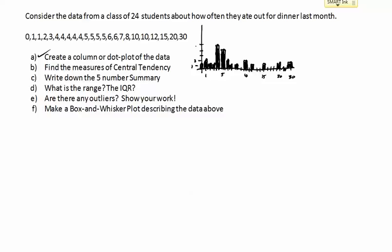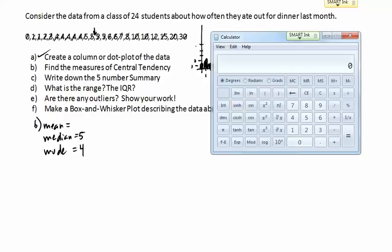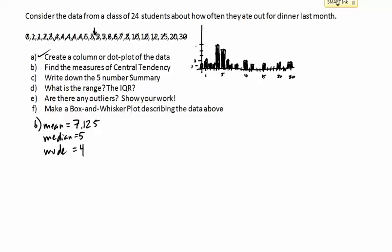Now it asks us to find the measures of central tendency — mean, median, and mode. From the dot or column plot you can see the mode is four, that's the one that happens most often. For the median, we cross things out from both ends and it ends up right in the middle, so the median is five. For the mean, I added all those numbers together and divided by 24, and I got a mean of 7.125.